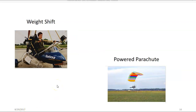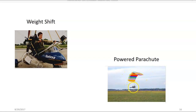On the left hand side you see a weight shift category aircraft, otherwise known as an ultralight. On the right side you see a powered parachute. The parachute is the same type used by skydivers, but the difference is that this parachute is attached to an engine which propels it forward.